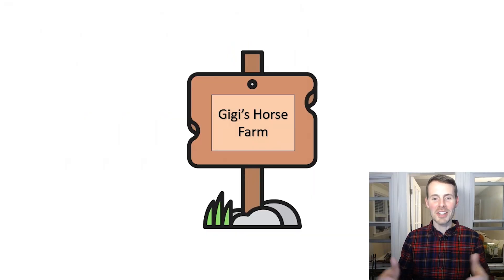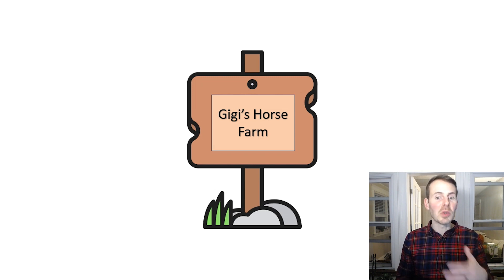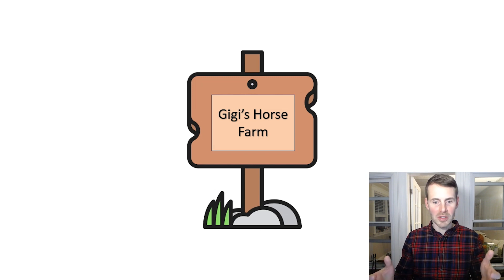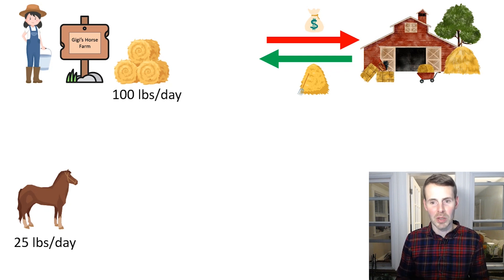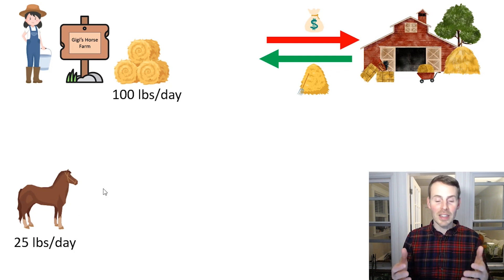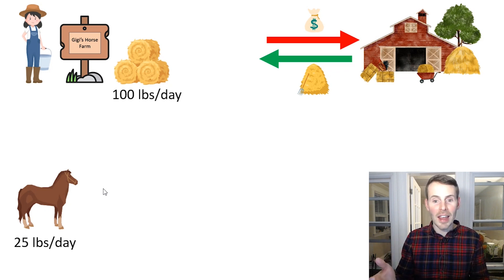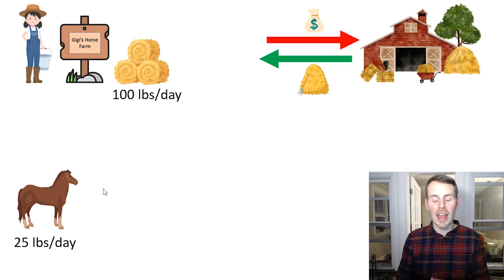We've made it to Gigi's Horse Farm. To give a little background information here, Gigi is someone who loves horses and she's thought about starting her own farm. In order to run a proper horse farm, there are a few things that Gigi needs to have in place first. She needs to have a horse, which she does here, as you can see in the lower left. But more importantly, she needs to be able to feed this horse. If she's going to be giving sleigh rides every day and offering this service to her customers, she needs to make sure that her horse is well-fed so that it can perform at a high level each and every day.